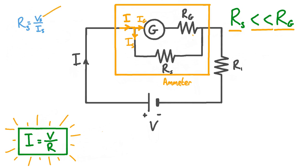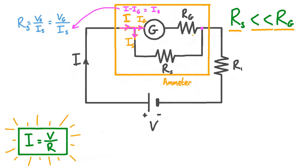Now we can make some substitutions into this expression. Firstly, we can recognize that the voltage across the shunt resistor Vs is the same as the voltage applied across the galvanometer Vg, because the two parallel branches are connected to the rest of the circuit at the same points — so there's a fixed potential difference between these two points. So we can replace Vs with Vg. Secondly, because the incoming current I is split into two parts, Ig and Is, we can say that I equals Ig plus Is. Subtracting Ig from both sides gives us Is equals I minus Ig, and substituting this gives us Rs equals Vg over (I minus Ig).